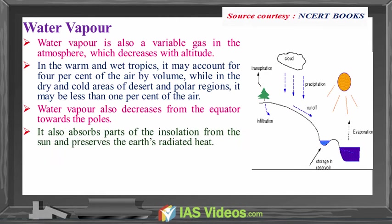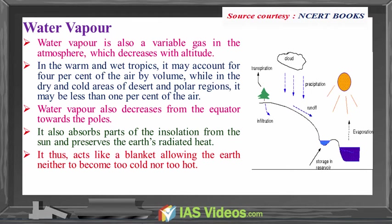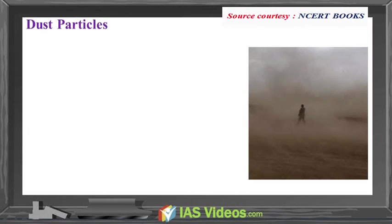Water vapour absorbs parts of insolation from the sun and preserves the earth's radiated heat. It thus acts like a blanket, allowing the earth neither to become too cold nor too hot. Water vapour also contributes to the stability and instability in the air.